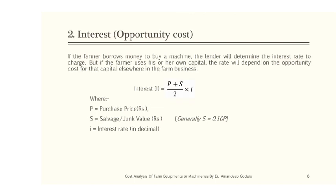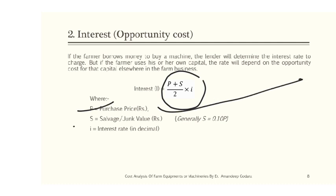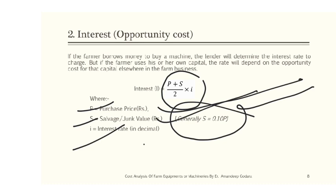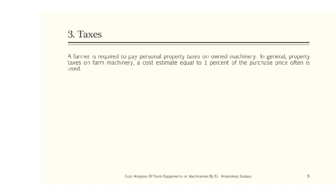Interest or opportunity cost: the rate of interest depends upon the opportunity cost of the capital used in the farm business. It is proportional to the remaining value of the machinery and is calculated by the formula: (P + S) / 2 × i, where P is purchase price in rupees, S is salvage or junk value in rupees (generally 10% of purchase price), and i is interest rate in decimal.